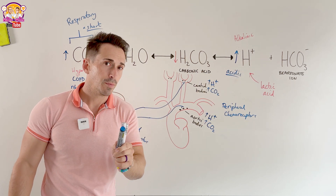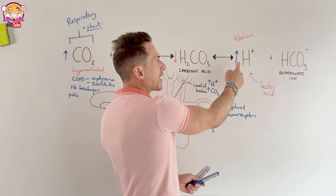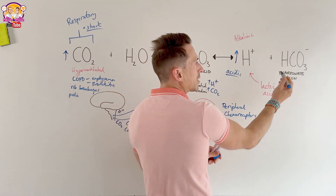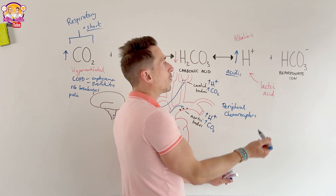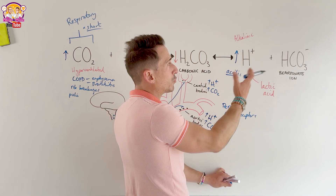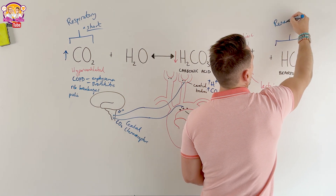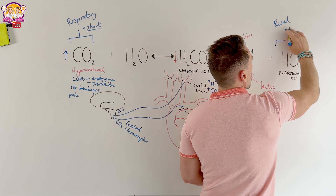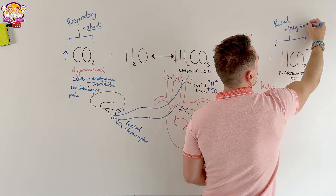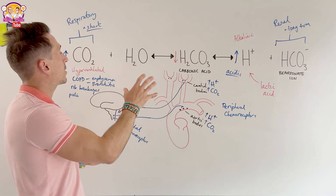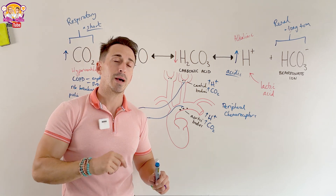Fortunately, we have the other side of the equation. We can also increase bicarbonate to mop up excess hydrogen ions, or excrete more hydrogen ions through the kidneys by adjusting bicarbonate reabsorption. This renal system provides long-term control, taking hours to days to kick in — and we'll cover renal control of acid-base balance in the next video.